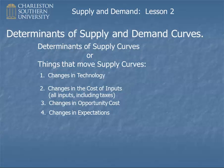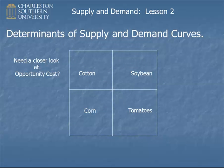Last for supply determinants is expectations. Put yourself in the shoes of the producer. If you thought the price would be higher in the future, you might hold your product back off the market and wait for the higher price. On the other hand, if you thought the price was going to be lower in the future, you might rush it to market today. Those are our determinants of supply curves — I've listed others, and you might find a few more in your book.